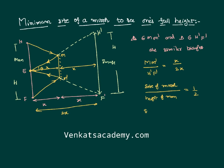So I can say the minimum size of the mirror required to see a man completely — be careful, this is the minimum size — equals the height of the man divided by 2. So we need a mirror whose height is half that of the man, and therefore you can see yourself completely wherever you are standing in a room. That is the point I wanted to prove. Thank you.